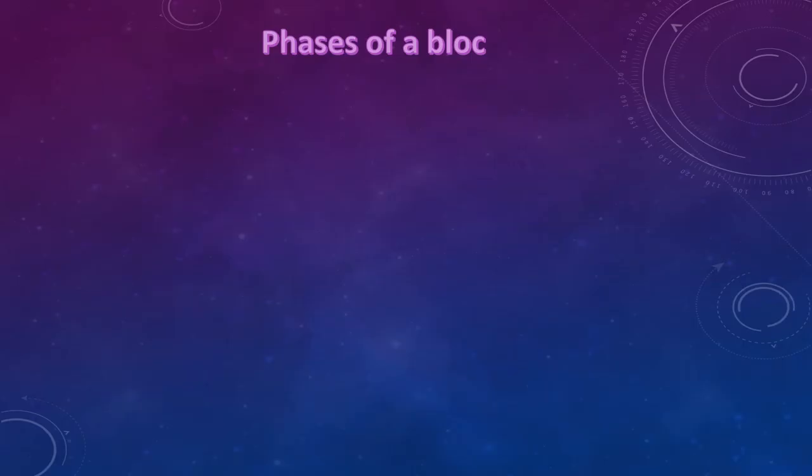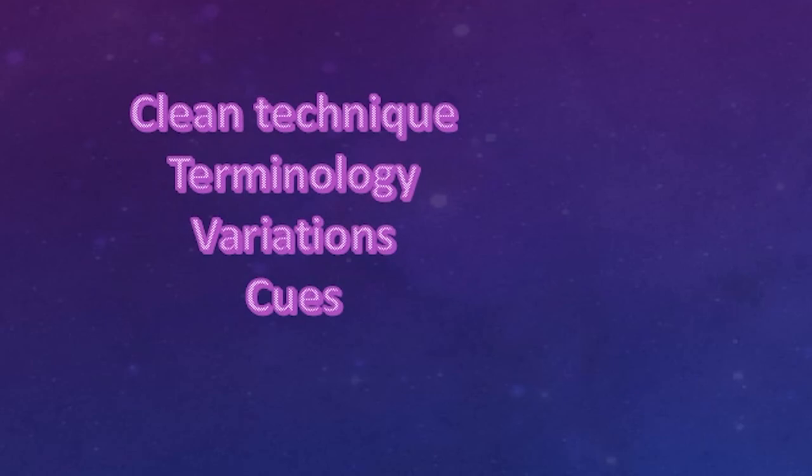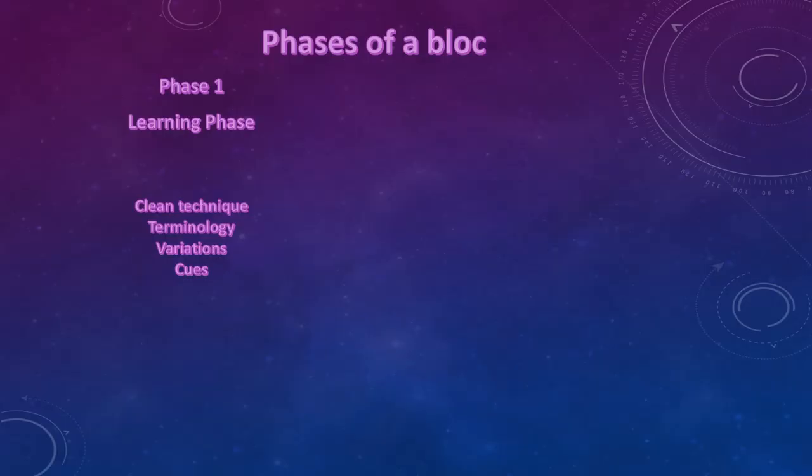The most important thing to know is how we can organize and analyze our blocks — what happens inside a block. We have what we call the block process, which has three phases. The first phase is the learning phase, where we focus on clean technique, explaining the terminology of the moves, cueing, and cool variations. In this first phase, energy levels are a little bit lower, but technique always needs to be clean.